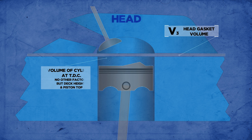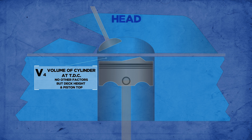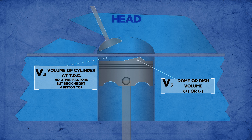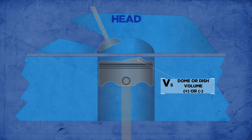Number four: the volume of the cylinder at TDC with no other components. In most engines, the piston stops just shy of being level with the deck of the engine block. This small volume of additional space lowers the static compression of the engine slightly. Number five: piston volume. A dome-shaped piston takes away volume, increasing static compression. A dish-shaped piston adds volume, therefore decreasing compression.